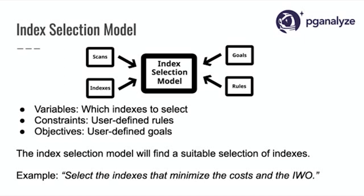In our index selection model, the variables are the indexes we're trying to select — we have a set of candidate indexes and want to know which ones to include in the solution. The constraints are user-defined rules, for example: "I don't want a solution that uses more than five indexes." The objectives are also defined by the user — for example: "minimize the sum of the costs of the scans in the solution." So the index selection model takes the scans and indexes as data, and the goals and rules as the problem definition, puts that into a model, and a solver gives us a solution.